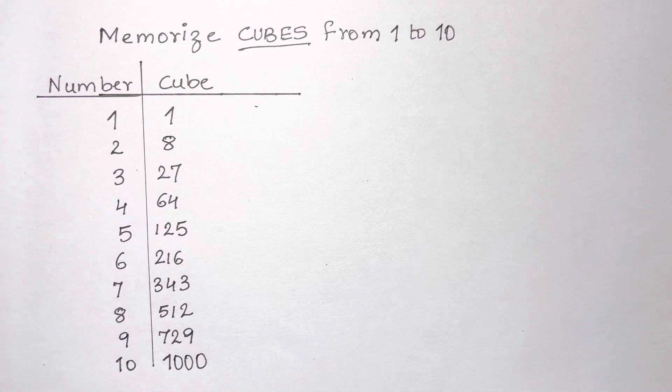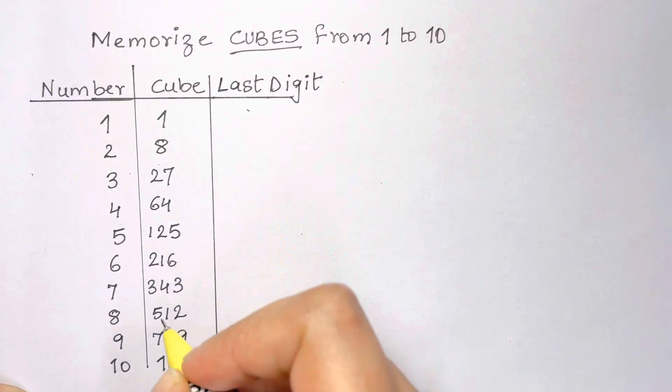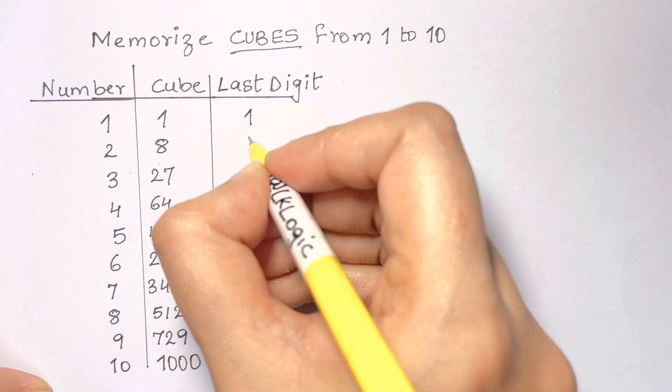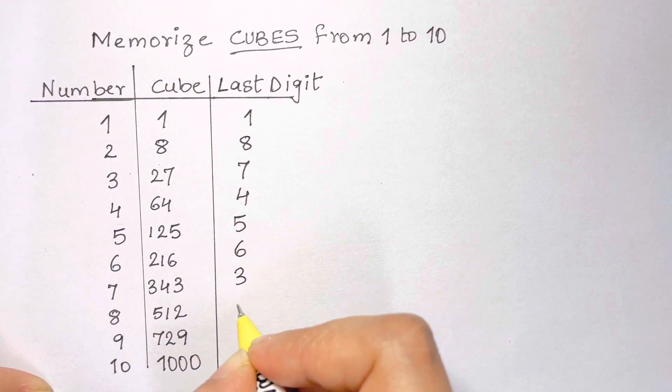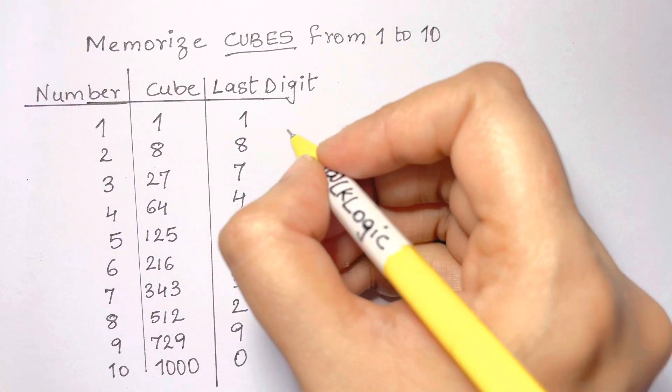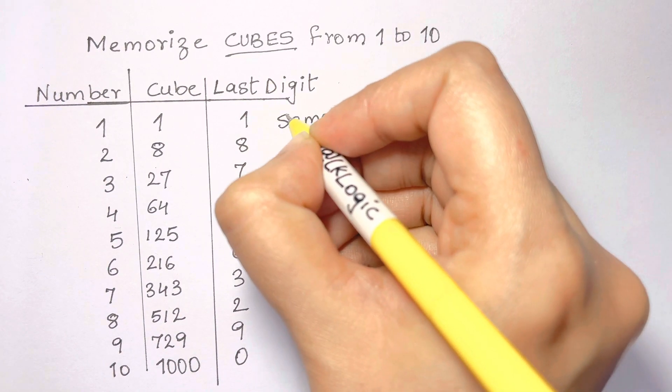Now once we have written down the cubes, I want you to focus on the very last digit of the number of the cube. What's important is that each of these 10 numbers end in a different last digit, and that will be very important in doing this trick.